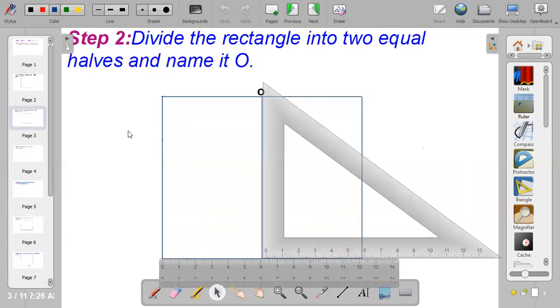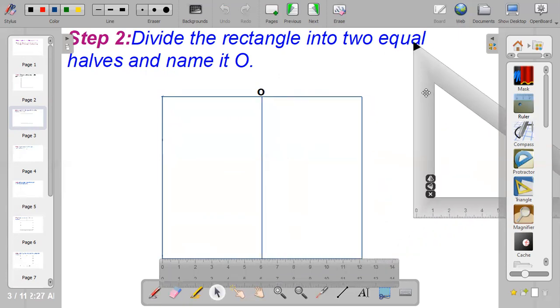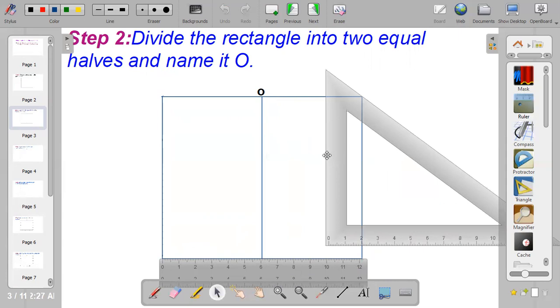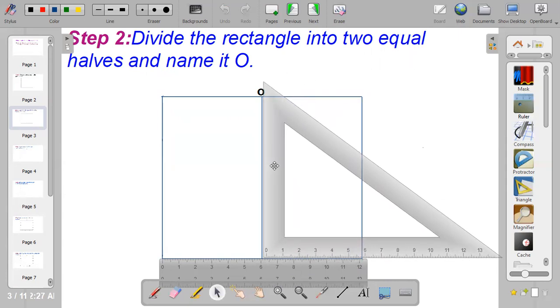So the next thing is to divide the rectangle into two halves. Now I have the rectangle which is 120 mm. The width is 120 mm. Then I will divide it into two equal halves and name it O.